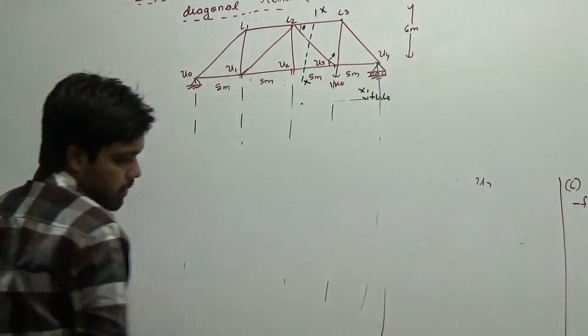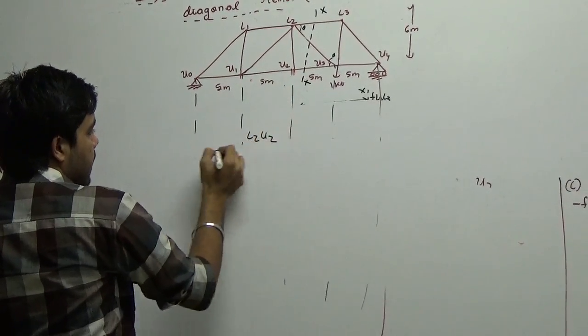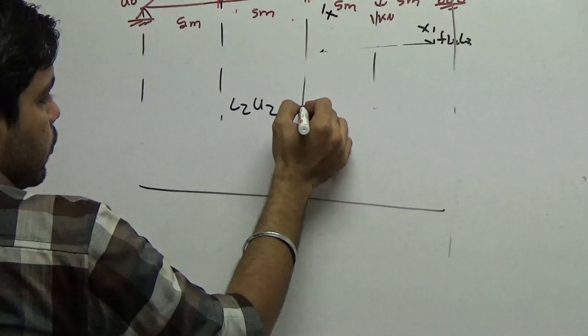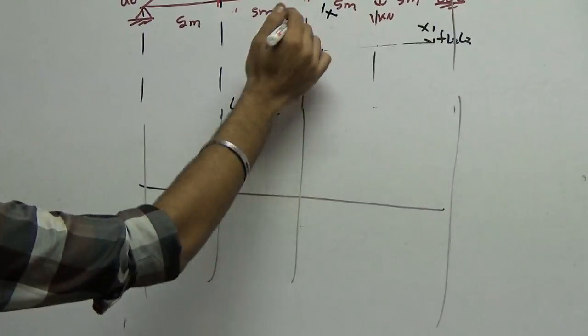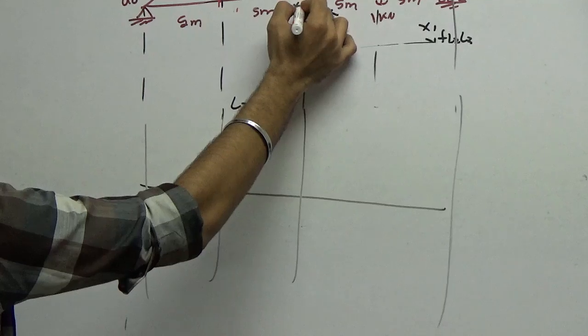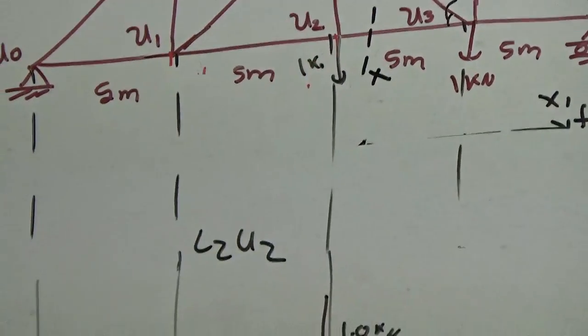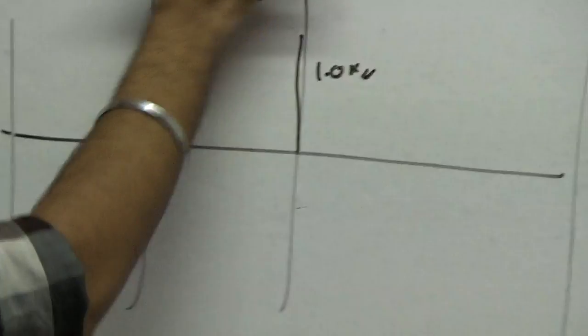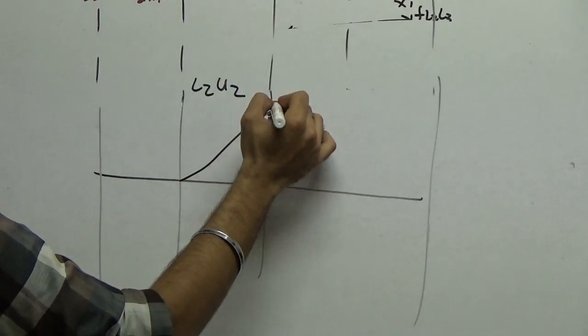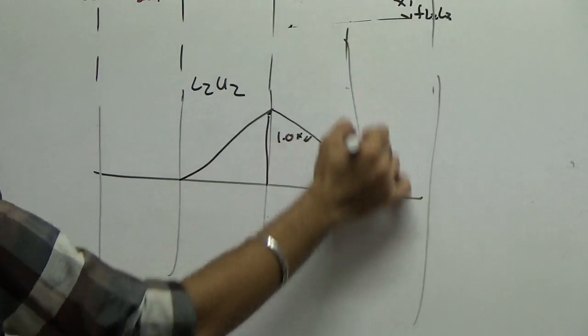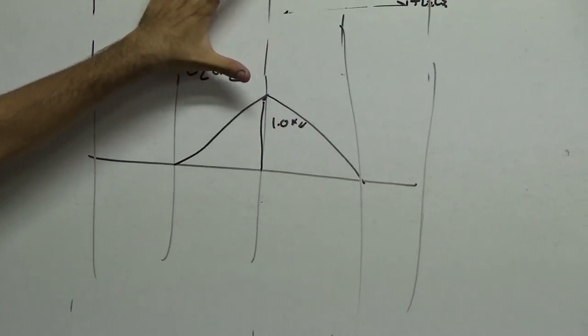In this problem only, I will just show one more thing. If somebody asks you, what is the ILD for L2, U2? Please note that L2, U2 is a 0 force member right now. But if any load comes over this 1 kN, it will generate a force of 1.0 kN. Whereas, if the load moves at any other location, it becomes a 0 force member. And that's why its ILD will be like this. So this is also an ILD for a 0 force member that I will explain in this.